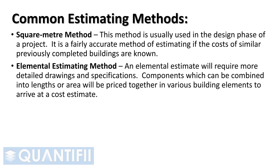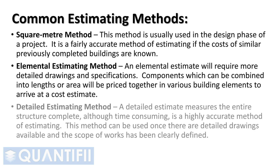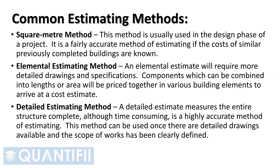Elemental estimating method. An elemental estimate will require more detailed drawings and specifications. Components which can be combined into lengths or areas will be priced together in various building elements to arrive at a cost estimate. Detailed estimating method. A detailed estimate measures the entire structure complete; although time-consuming, it is a highly accurate method of estimating. This method can be used once there are detailed drawings available and the scope of works has been clearly defined.